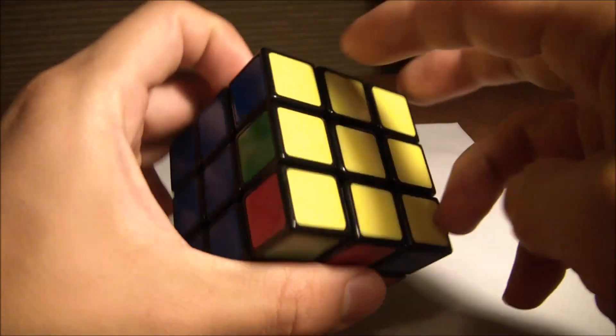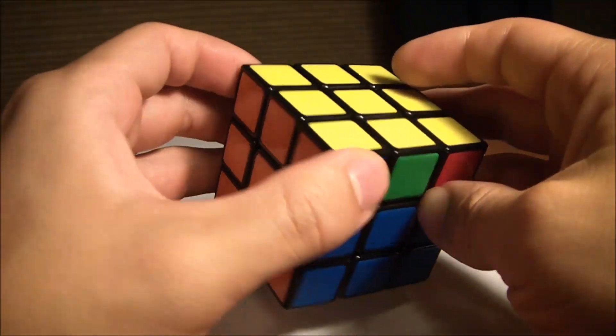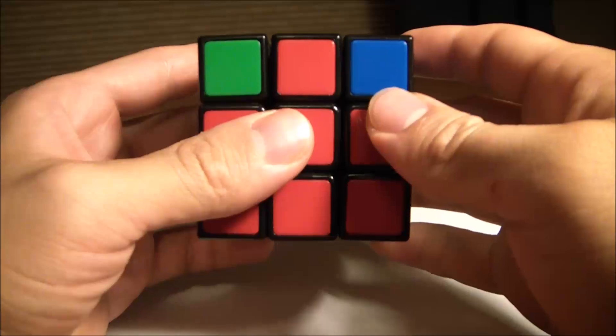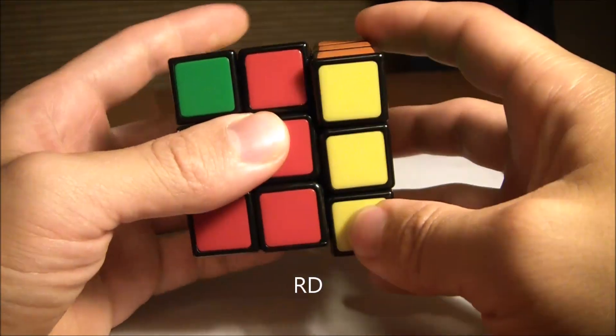In this case, we put the correct corner pieces in the back and do the following algorithm: right face down,